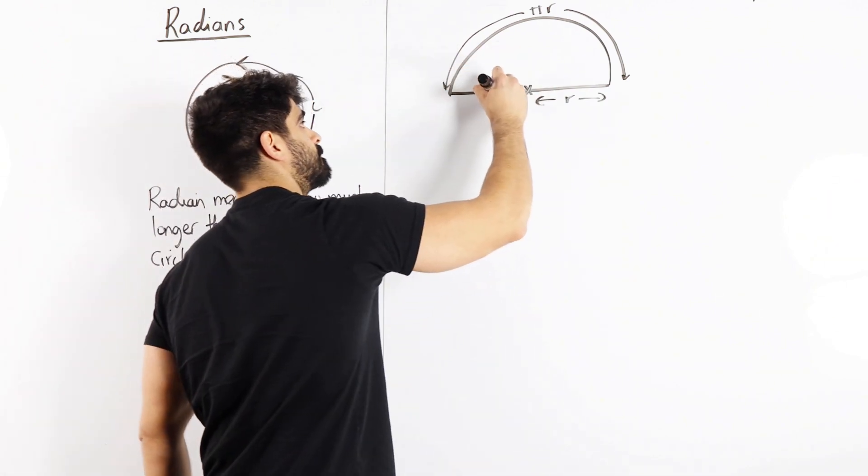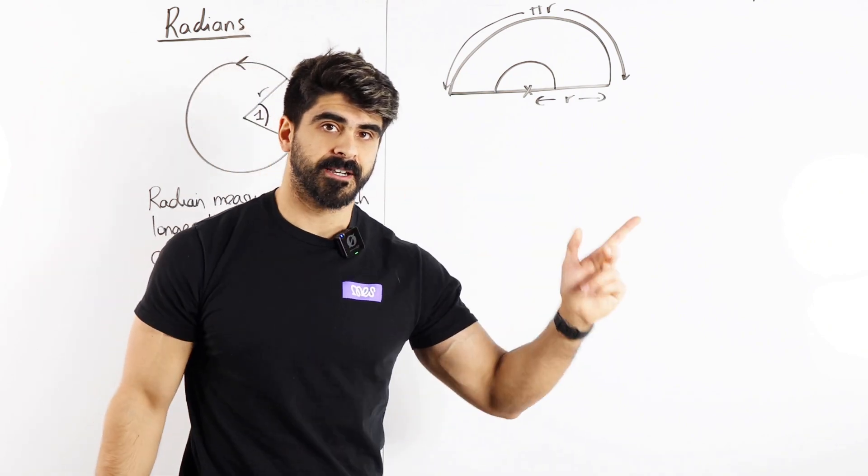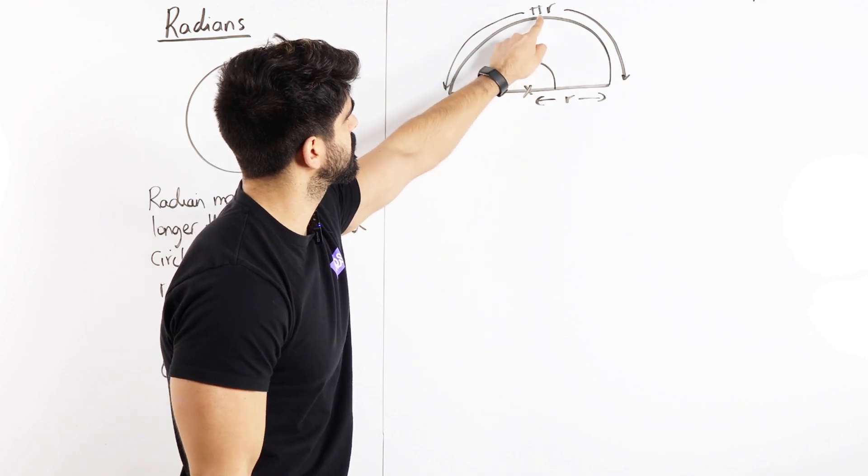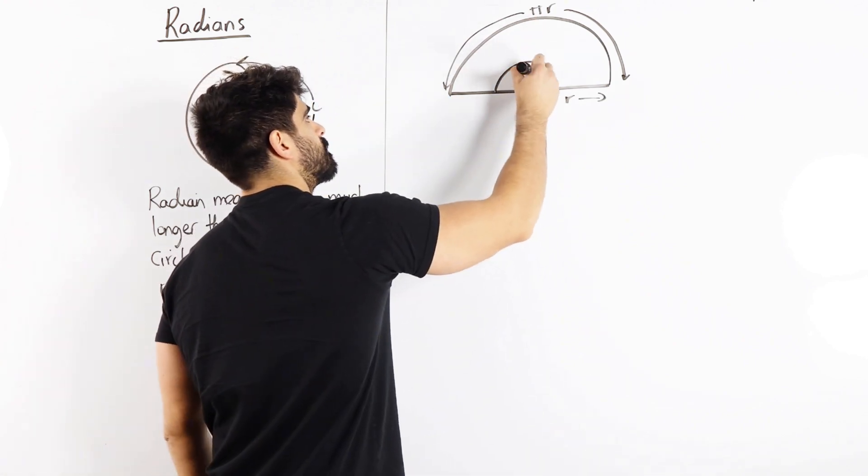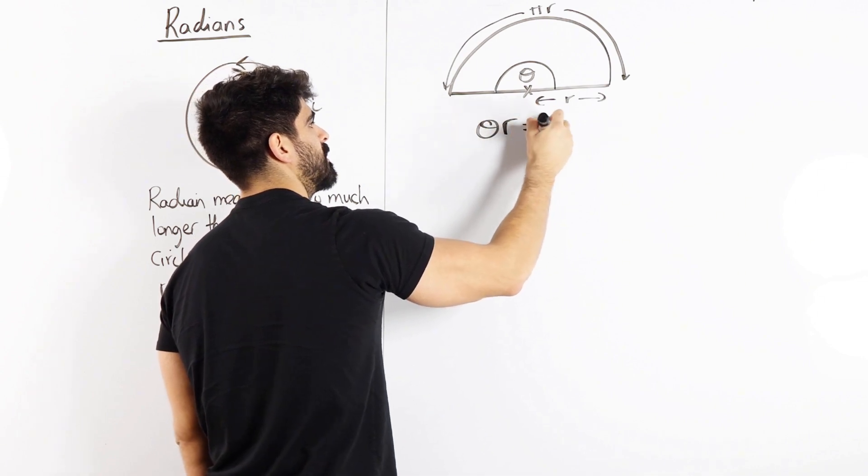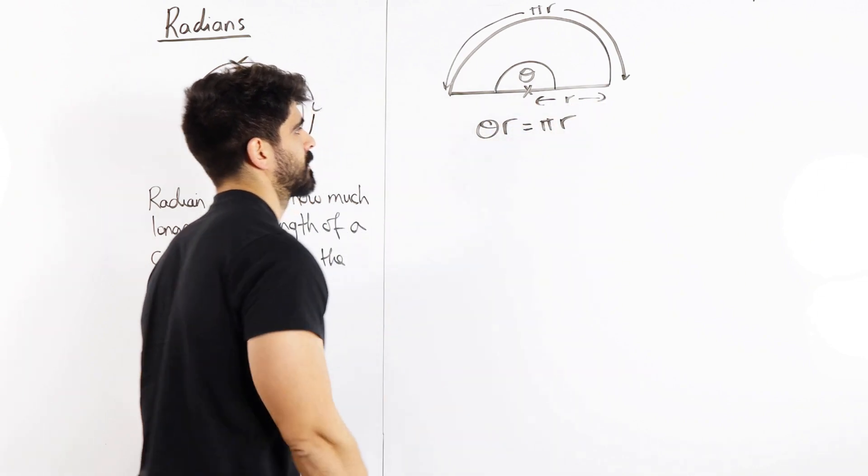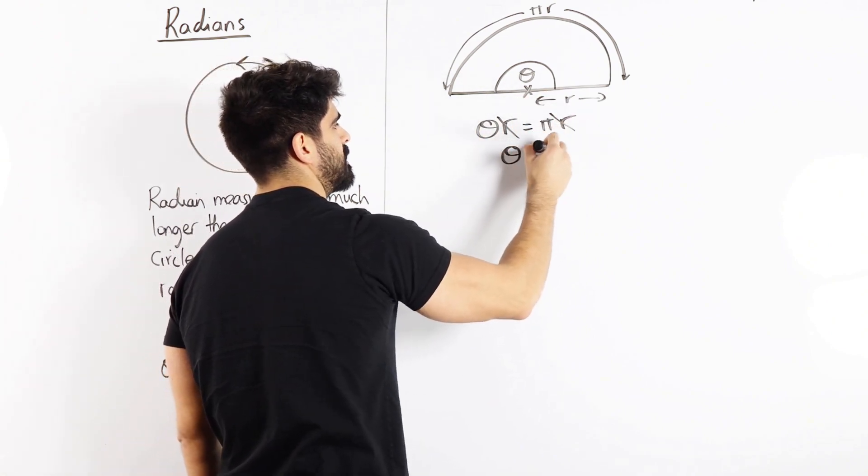So the radian, this angle is telling us how many times bigger this is compared to this. We'll call that theta. Theta times r is pi r. All the r's cancel. So theta is pi.